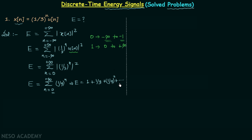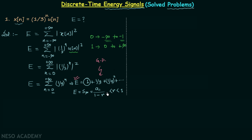Looking closely at this sequence, we have a geometric progression. This is the sum of an infinite GP as the total energy. The sum of an infinite GP equals A1 divided by 1 minus R, where A1 is the first term and R is the common ratio. We can use this formula only when the common ratio R is less than 1 but greater than minus 1.